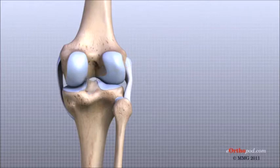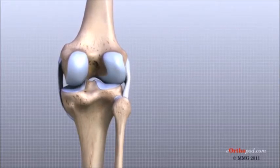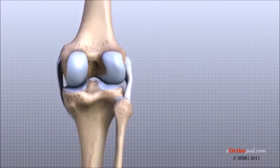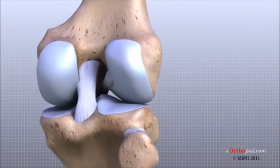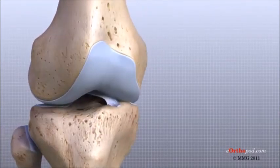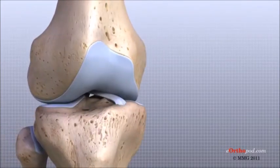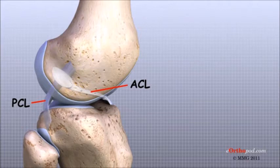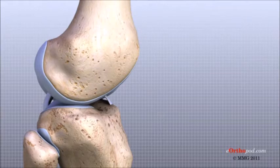The MCL and the LCL prevent the knee from moving too far in the side-to-side direction. The ACL and the PCL control the front-to-back motion of the knee joint. The ACL keeps the tibia from sliding too far forward in relation to the femur. The PCL keeps the tibia from sliding too far backward in relation to the femur. Working together, the two cruciate ligaments control the back and forth motion of the knee. Taken all together, the ligaments are the most important structures controlling the stability of the knee.